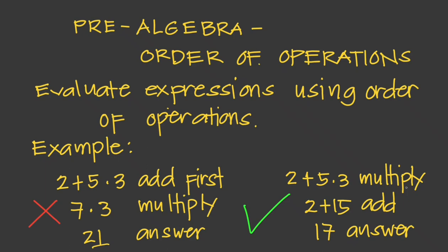Whereas if we multiply first, then add, we get the correct answer, which is 17. This example illustrates that if the same problem is done two different ways, we will arrive at two different solutions. However, there is only one method that can be correct — that's why we follow order of operations.